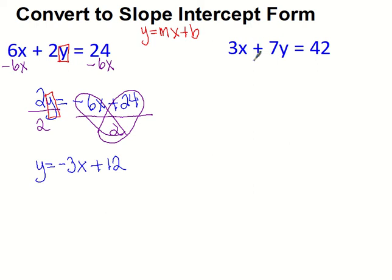All right, it would be a good idea to maybe pause and try the next one just to see if you can do it. So pause and then see how it goes. All right, so we should have first subtracted 3X. Get 7Y equals negative 3X plus 42. We're going to then divide by 7.